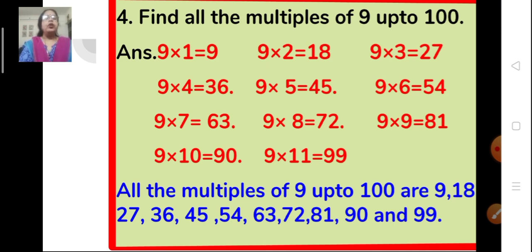Now let us move on to question number 4: find all the multiples of 9 up to 100. We write the multiplication table of 9 up to 11 times, since 9×11=99 which is less than 100. The multiples of 9 up to 100 are: 9, 18, 27, 36, 45, 54, 63, 72, 81, 90 and 99.